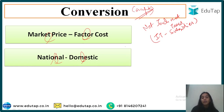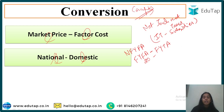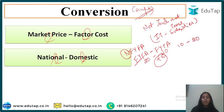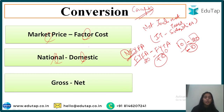Next, to convert national to domestic or domestic to national, we take into account net factor income from abroad — how much our factors have earned abroad minus the factor income paid to foreign factors. For example, if our factors earn 20 rupees from abroad but we pay 10 rupees to foreign factors here, the net factor income from abroad is plus 10.